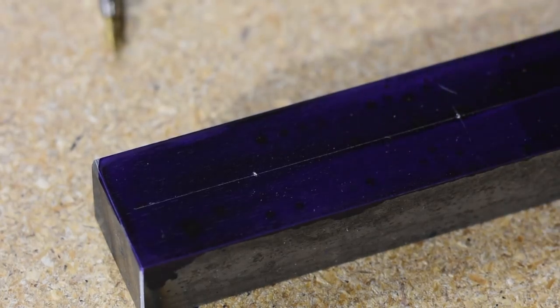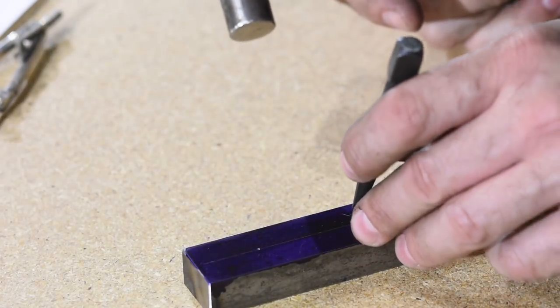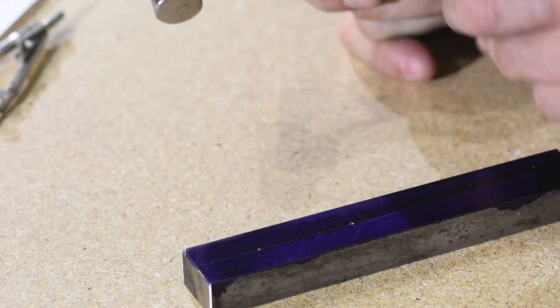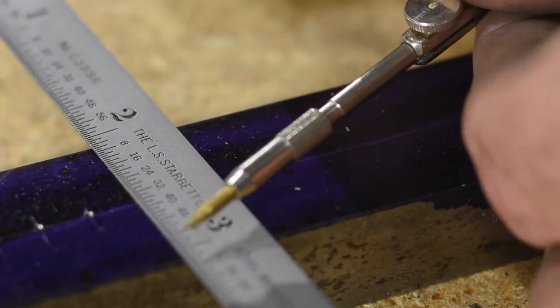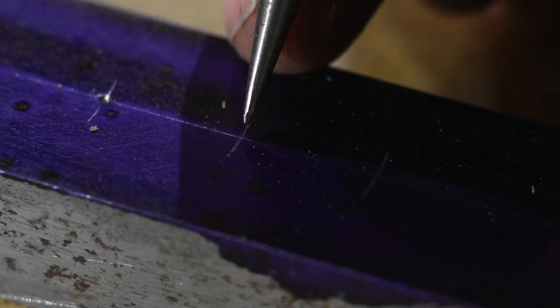Once they're marked, I'll carefully locate them using that same little prick punch. Once I've got those teeny little holes punched, I'll use them to locate a bigger center punch, which will make a hole big enough to guide the drill into the correct spot. The whole key to this thing is that we're going through this really structured process to locate these holes as tightly as we can.